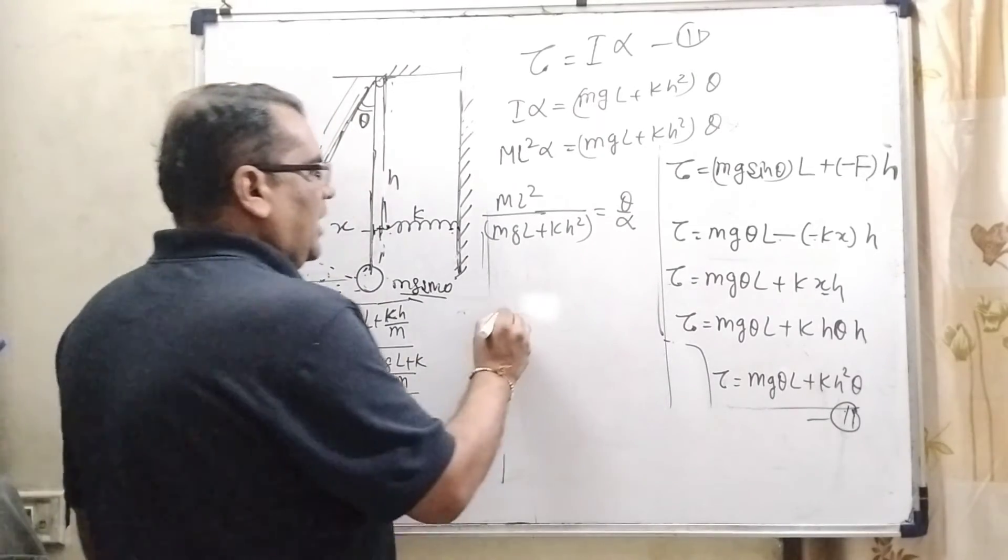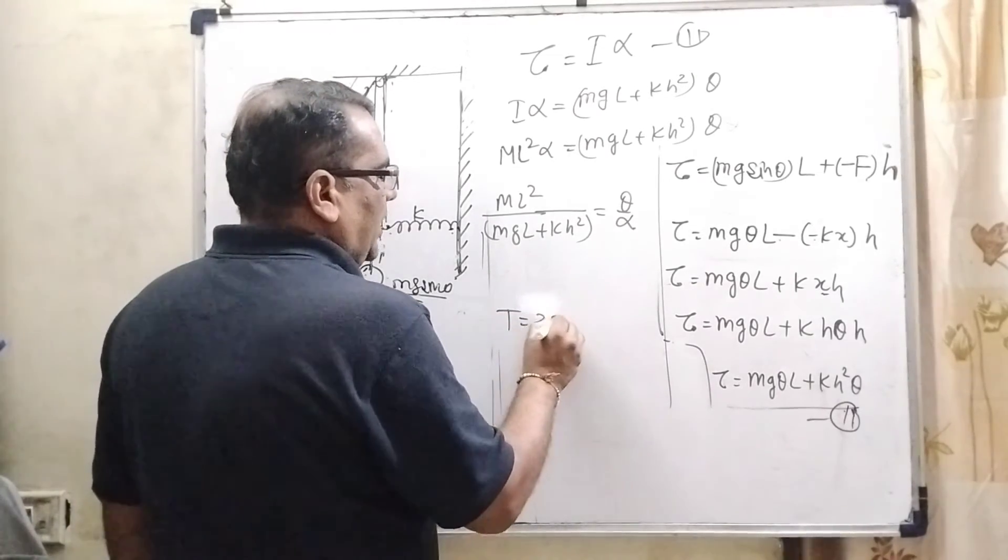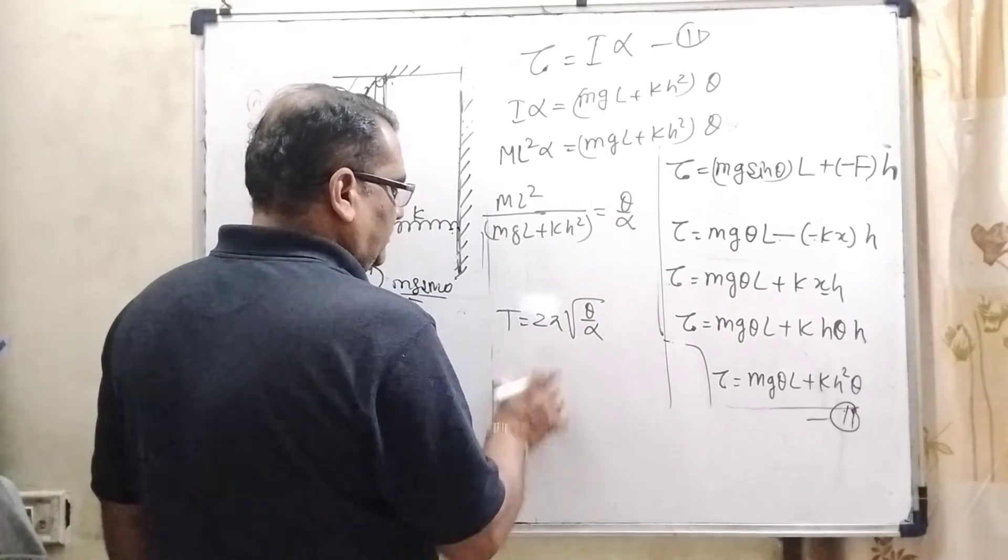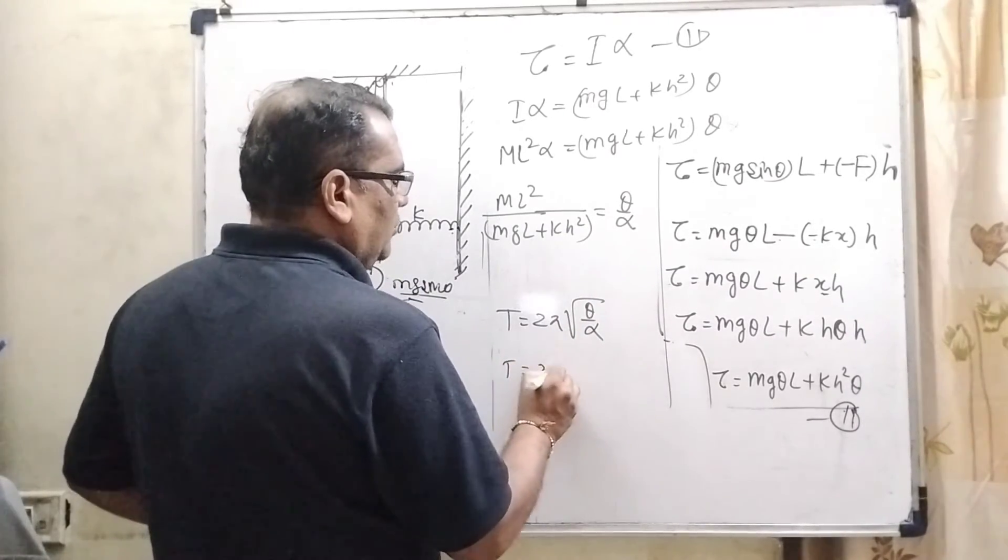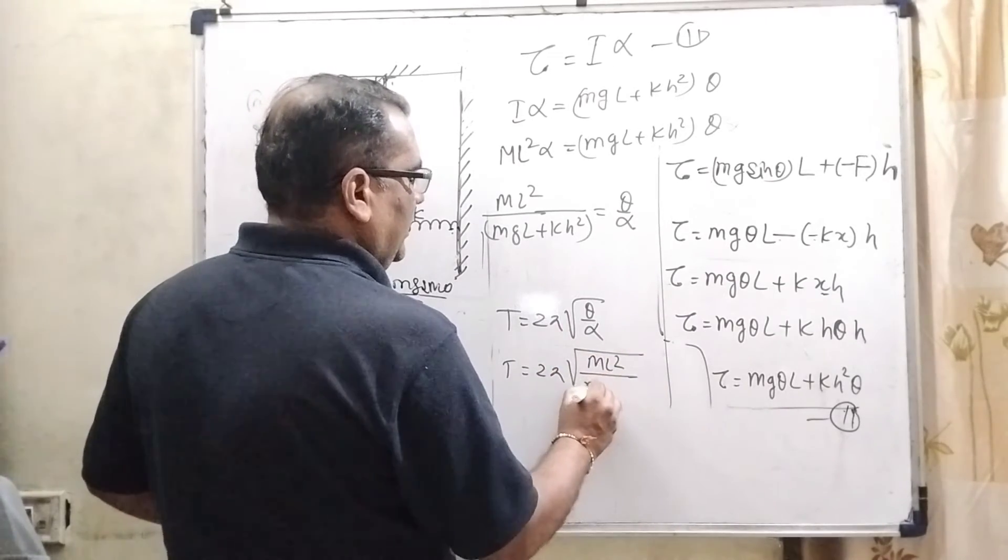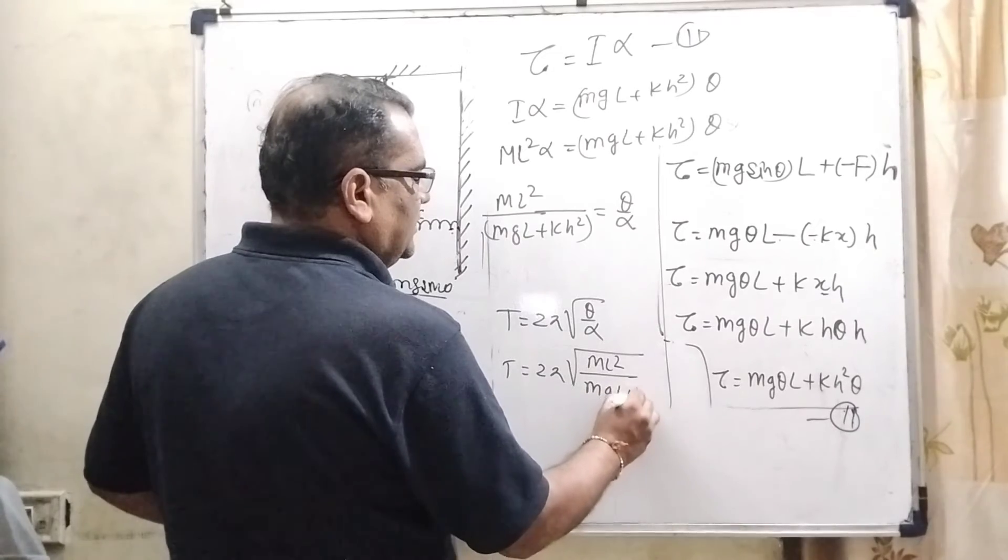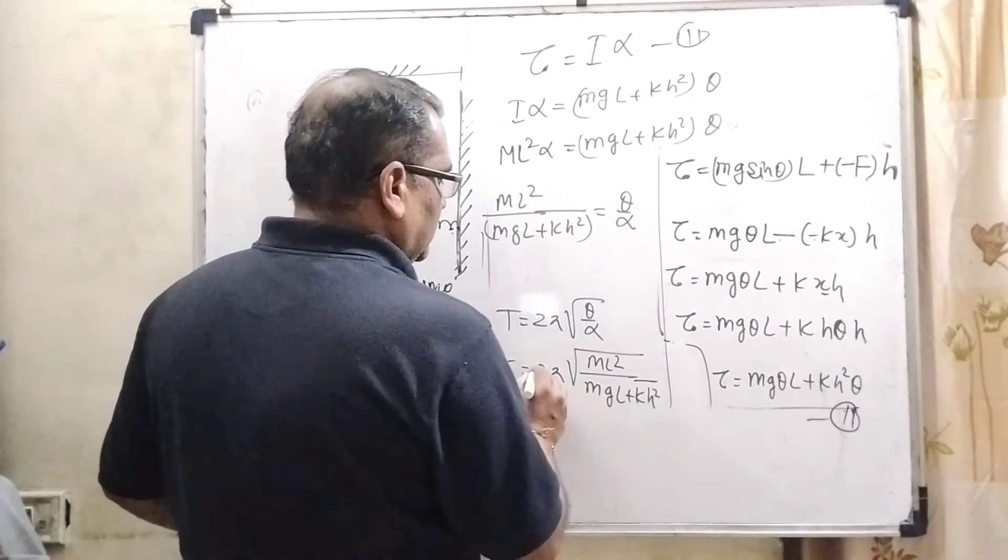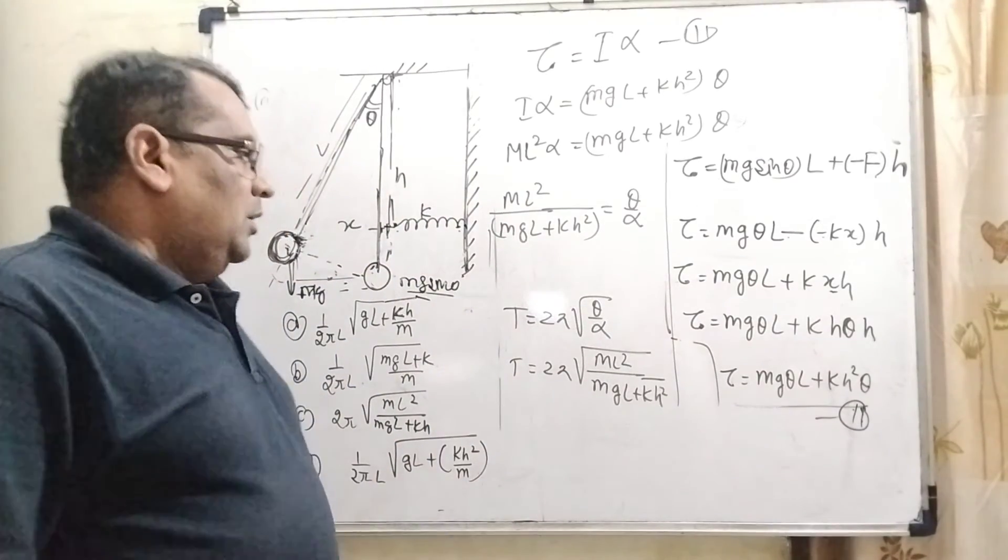So, here we know that time period T equal to 2 pi root theta by alpha. So, T equal to 2 pi root ML square by MGL minus KH square.